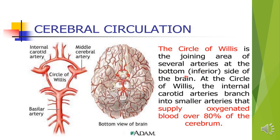This circle is at the base of the brain. At the circle of Willis, the anterior carotid artery branches supply about 80% of the cerebrum, which comes from the anterior cerebral artery.